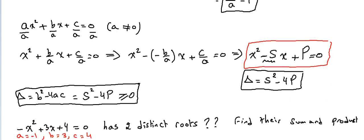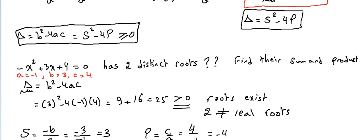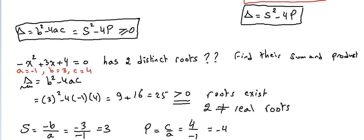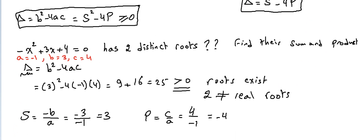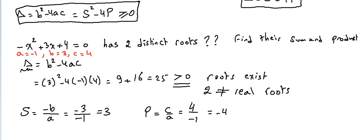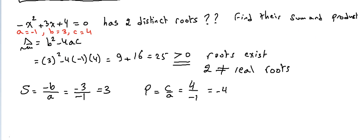We said that Delta can be found in either of two ways: either b²−4ac, or s²−4p, where s is the sum of the roots and p is the product. If the roots exist, Delta should be greater than or equal to zero. We did this example in the previous video.